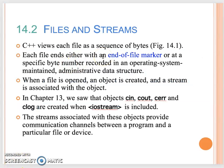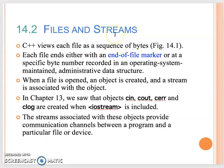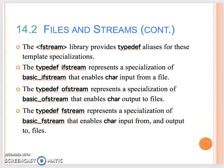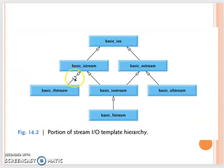Now let's talk about how to process the sequential file, focusing on the text file. When you open a file, an object is created — we call that the file stream. With a file stream object you can write to or read from the file. Actually, files come from the stream object. Let's look at the hierarchy of the stream IO template hierarchy.